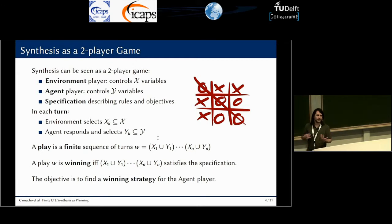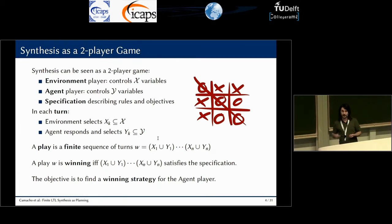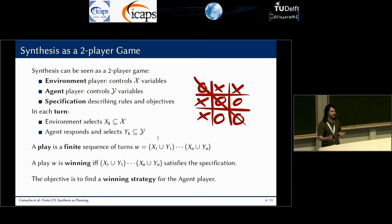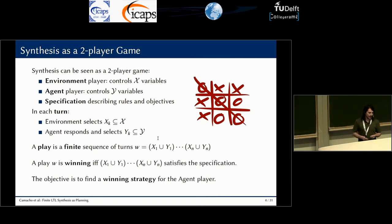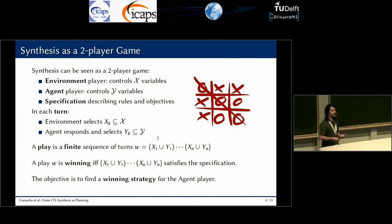The game goes as follows. In each turn, the environment player selects a subset of X variables and the agent responds by selecting a subset of Y variables. A play is just a finite sequence of turns between the agent and environment players. A play is winning if this finite sequence satisfies the specification. The goal is for the agent player to find a winning strategy.